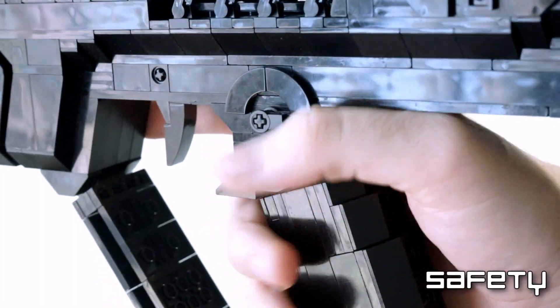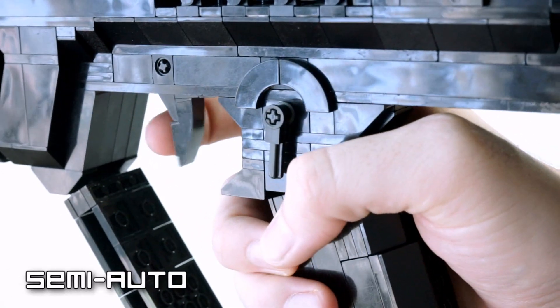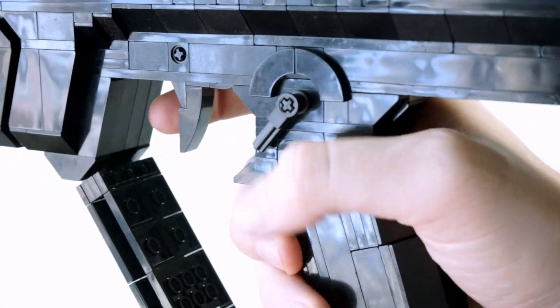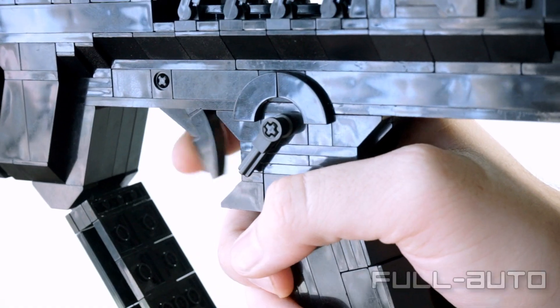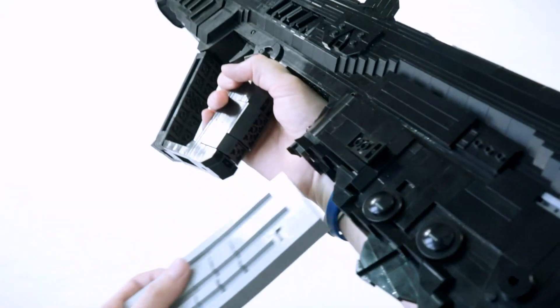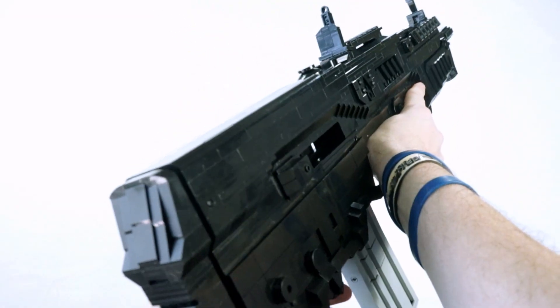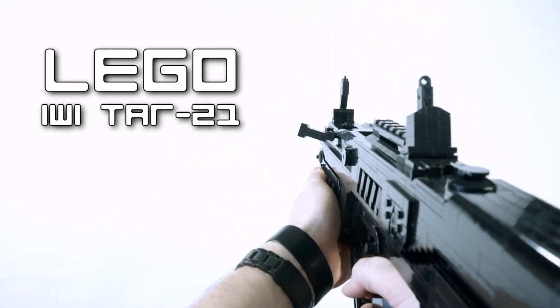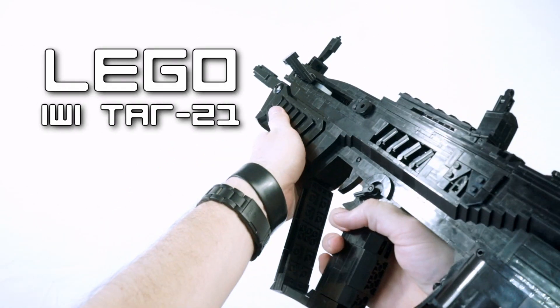Throughout the years of testing in combat, the rifle has been essentially battle proven by the IDF and also numerous other countries who have deployed this weapon to their soldiers as well. So, here we have the IWI TAR-21 Assault Rifle, made out of Lego.